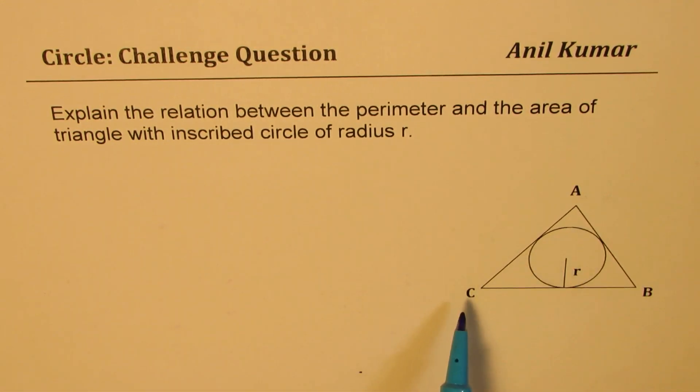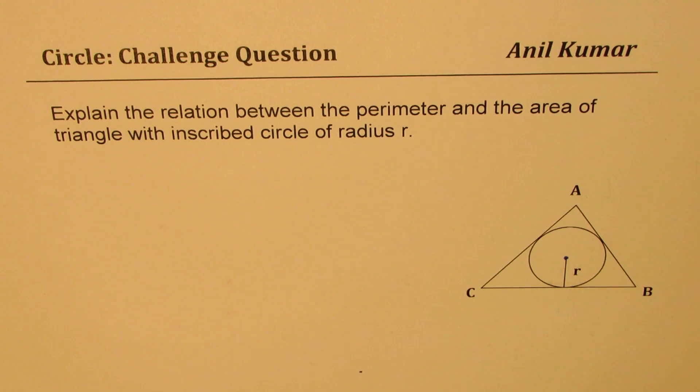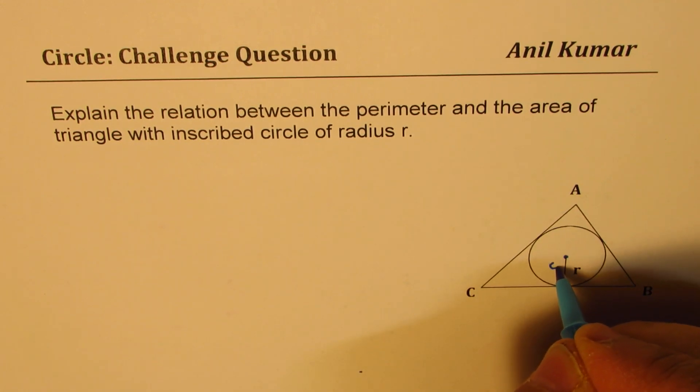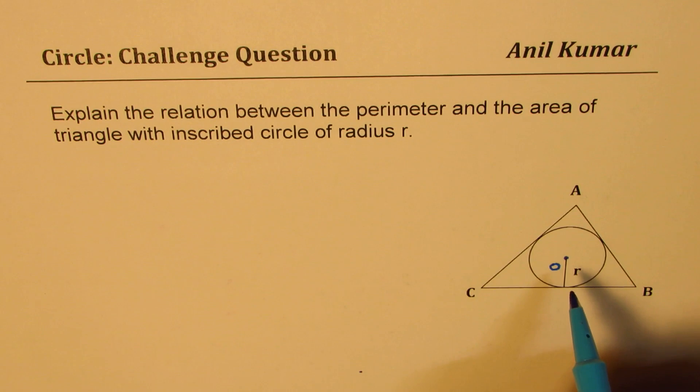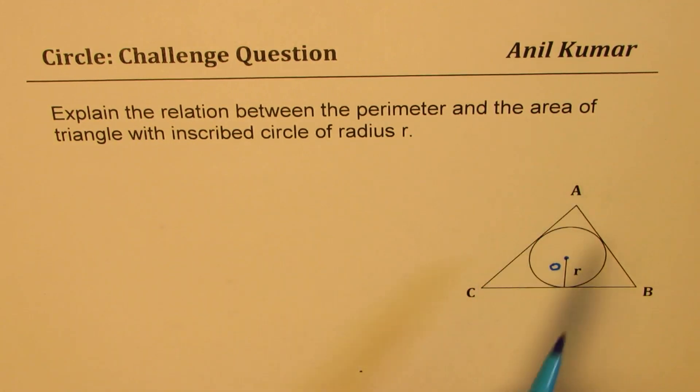So we are shown a triangle ABC with a circle inscribed. Let's say O is the center of the circle. You have to write a relation between perimeter and the area of this triangle ABC.